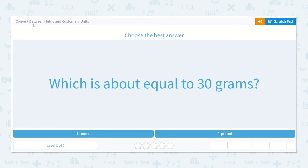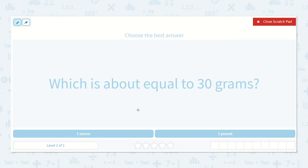Let's take a look at the lesson, Convert Between Metric and Customary Units. It says, choose the best answer, which is about equal to 30 grams, one ounce or one pound?